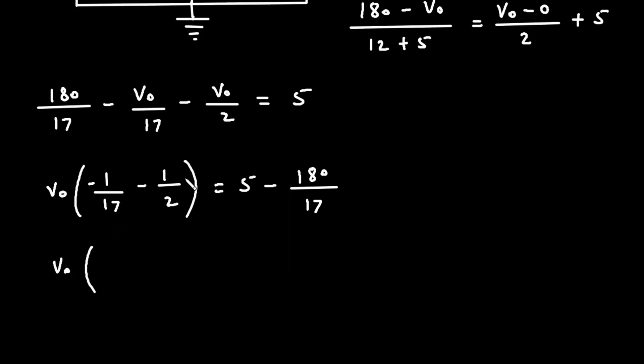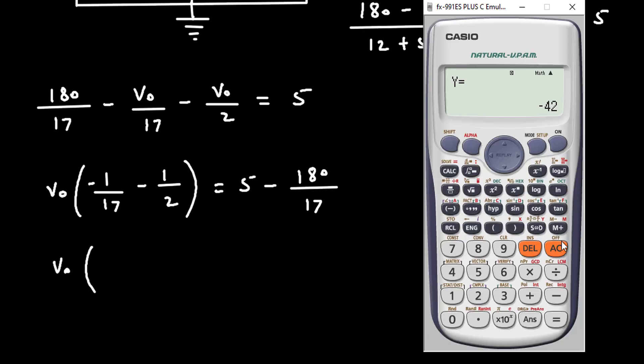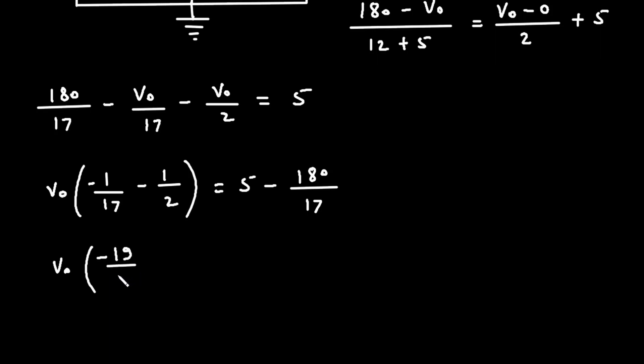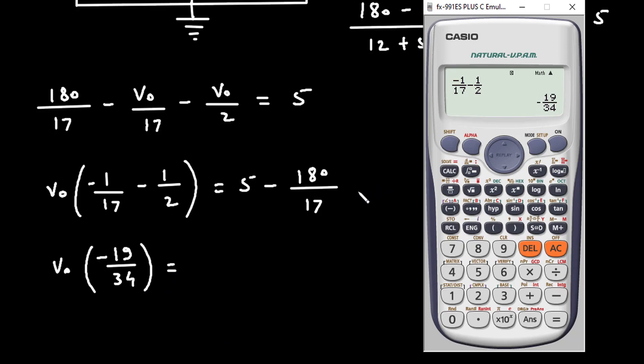VO in bracket. Let's solve this. So, it is minus 1 upon 17 minus 1 upon 2. So, it is minus 19 upon 34 is equal to 5 minus 180 divided by 17.